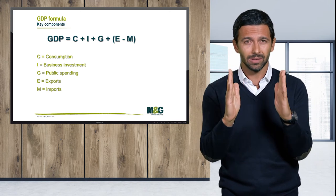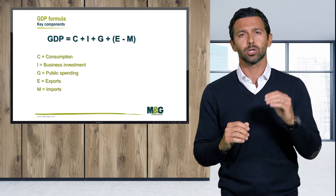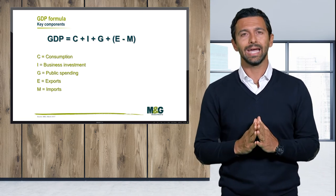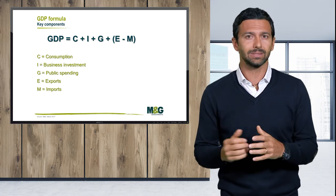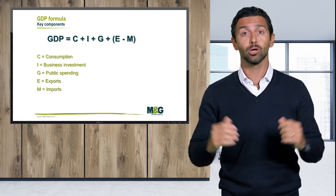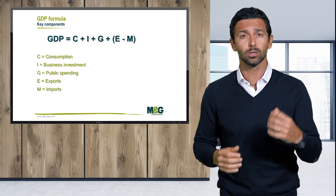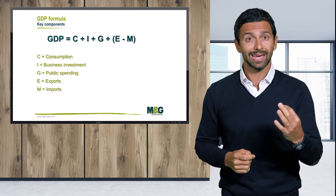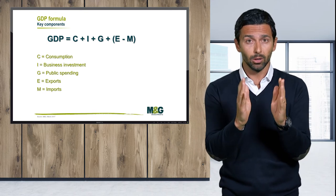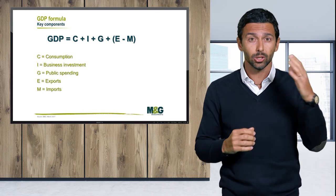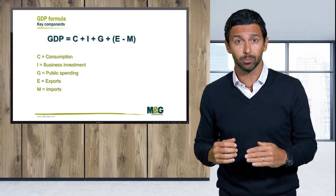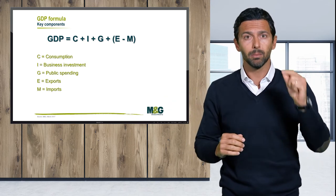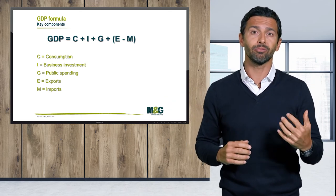Finally, the last important family we look at is the current account. The current account is probably the most complex of these measures and is paired together with the financial or capital account of the balance of payments of a country. By definition, the current account is the sum of the trade balance — goods and services exports minus imports — plus net transfers between countries, plus net income from foreign activities.